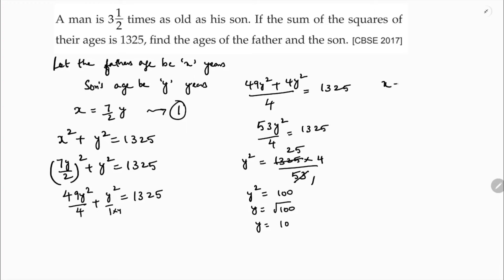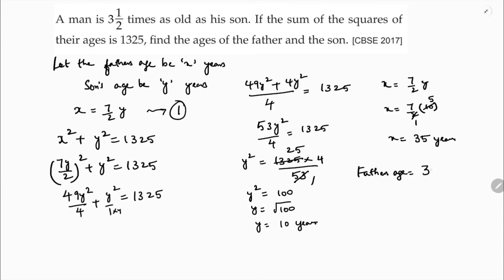Now if I calculate X: X is 7 by 2 times Y, so X is 7 by 2 into 10. That gives X equals 7 times 5, which is 35. So father's age is 35 years and son's age is 10 years.